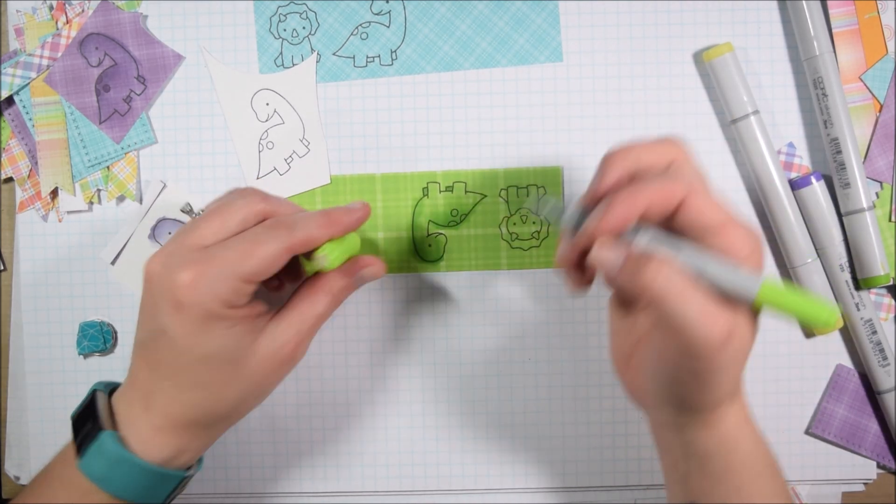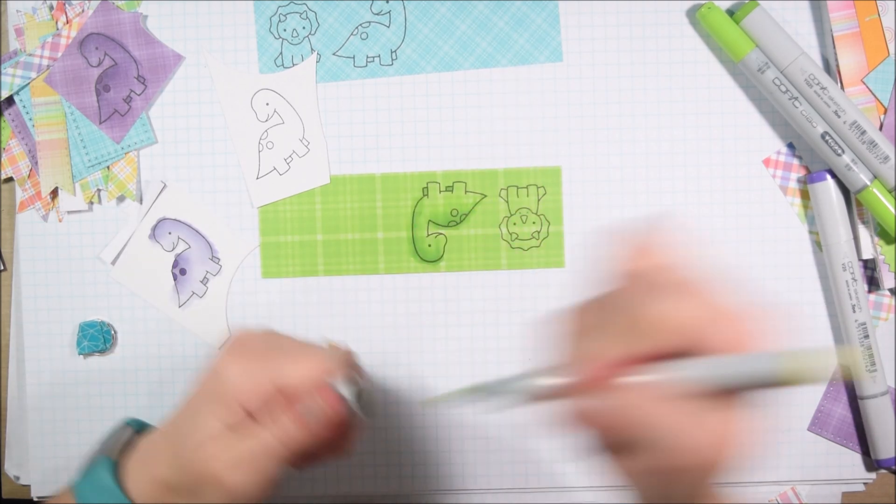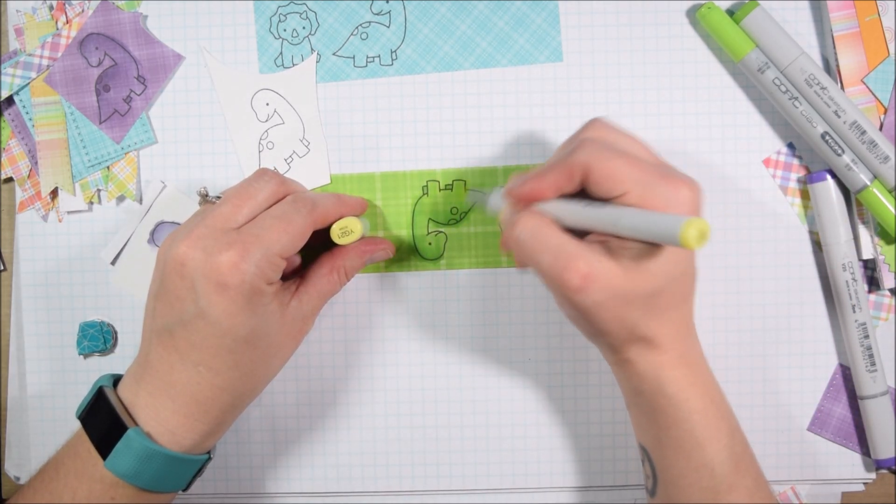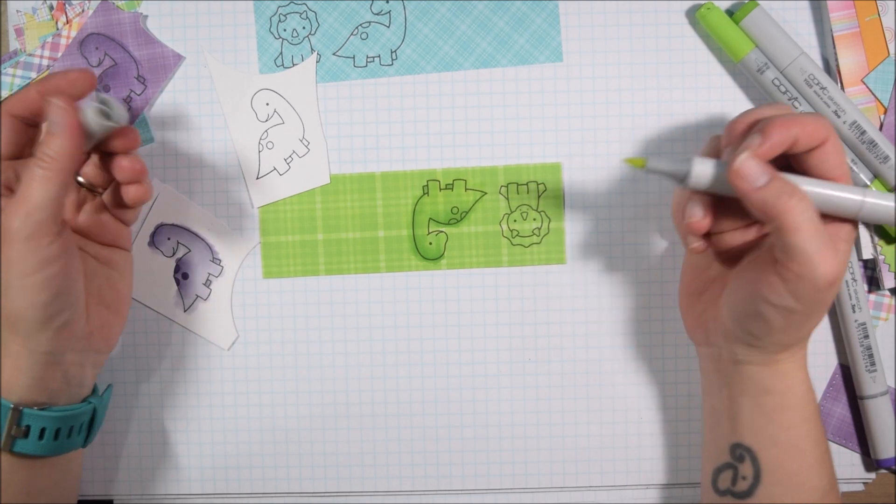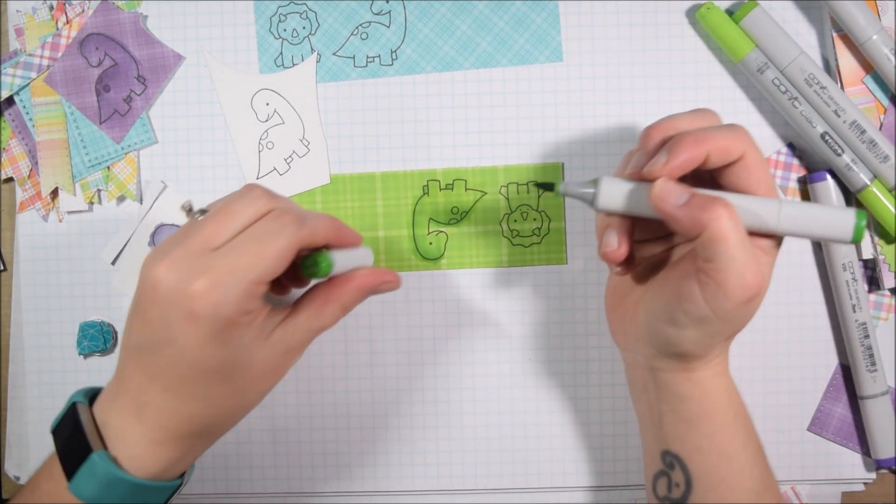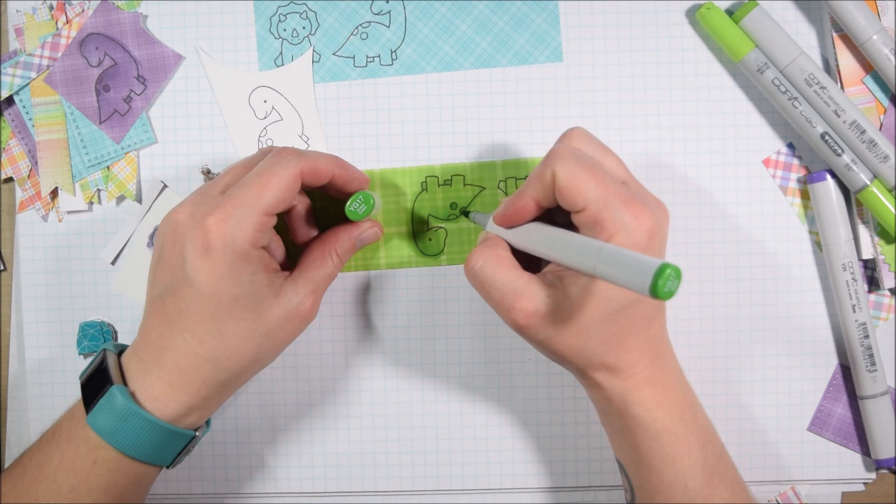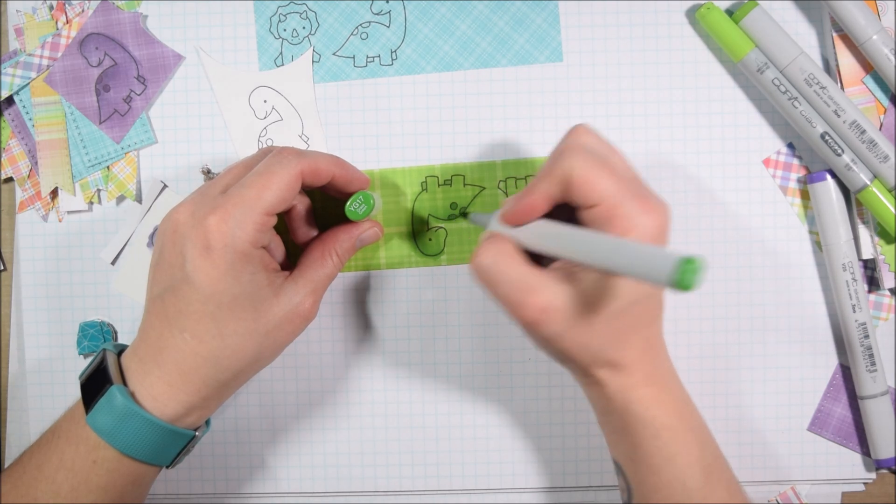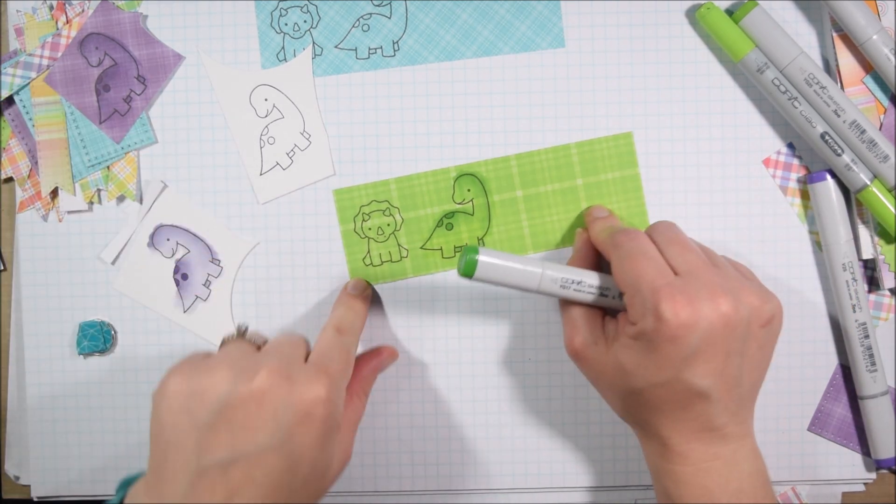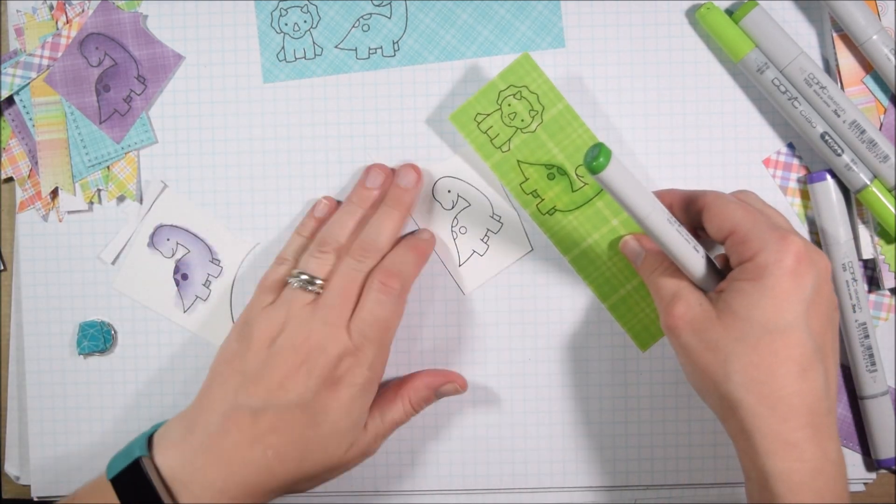But also it uses up more scraps. Then when I did do a few Copic colored ones just on plain cardstock to show you the difference, I also used scraps of that. So either way, to me, it's a good scrap busting exercise. I am going to fussy cut these, so I am scribbling outside the lines to color.